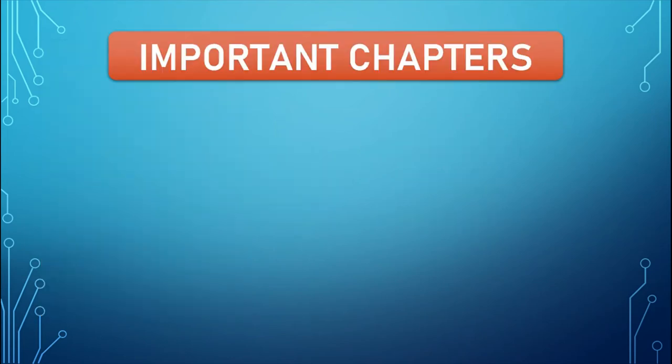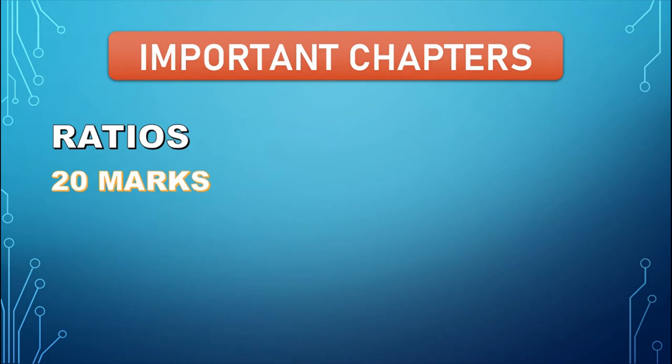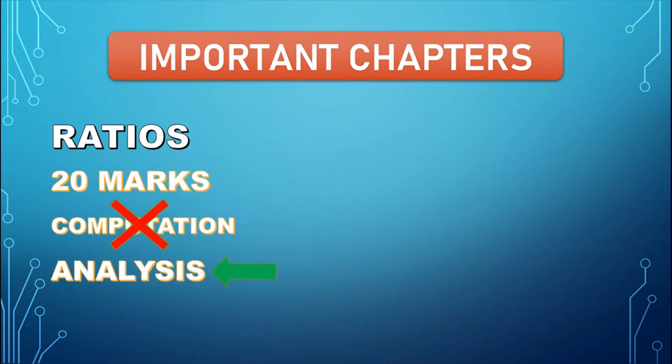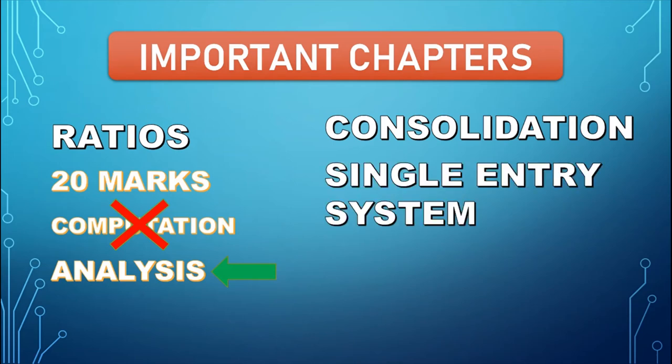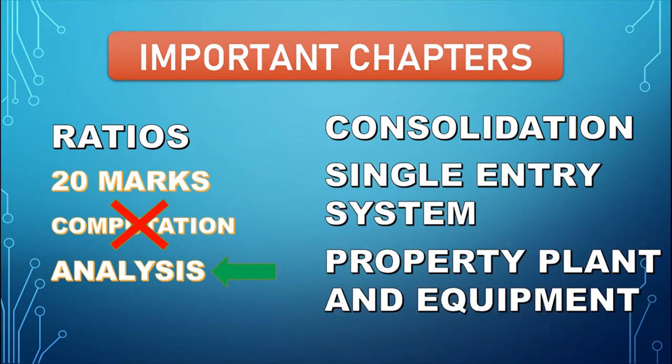Next, let us see the important chapters you should concentrate on while preparing for the FR exam. The first chapter is Ratios. Ratios come for almost 20 marks, but remember those 20 marks are not given for computation of ratios but for analysis. So concentrate more on analyzing ratios rather than computation. Other important chapters to refer to are Consolidation, Single Entity System, and Property, Plant and Equipment.